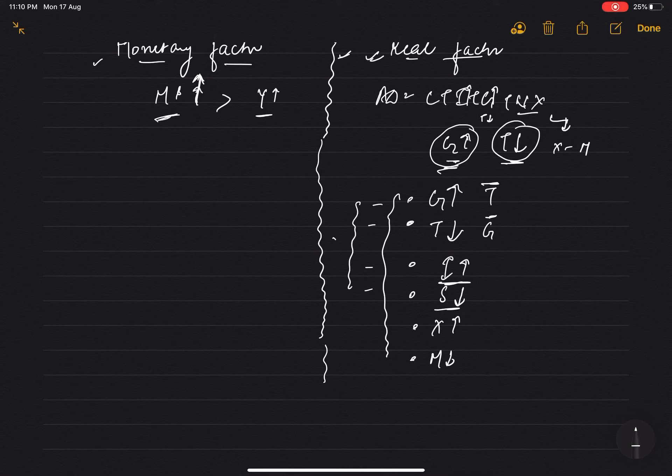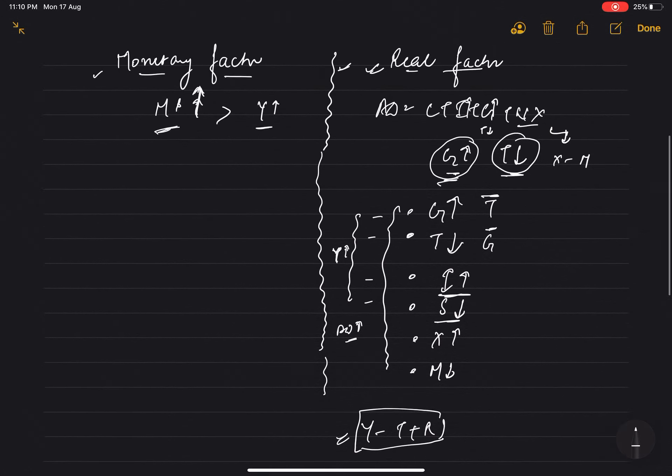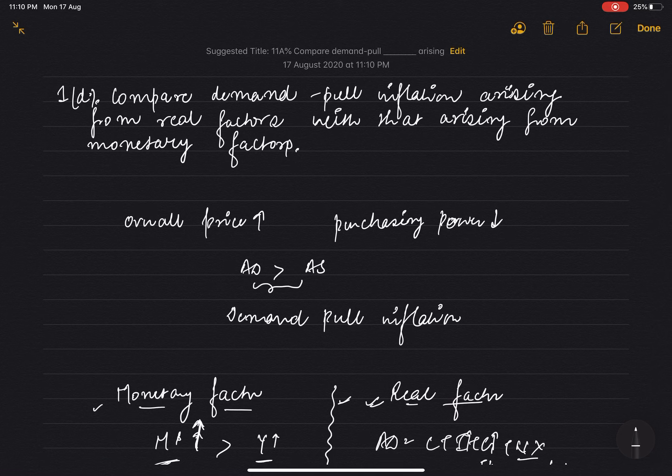Disposable income means how much income we have in hand - that means after paying tax and after taking into account transfers, how much money is left in hand. Due to these four factors, our disposable income increases. Due to which the increase in aggregate income results in increase - Y increases, so AD increases. When aggregate demand increases, demand pull inflation occurs. I hope you understood everything.